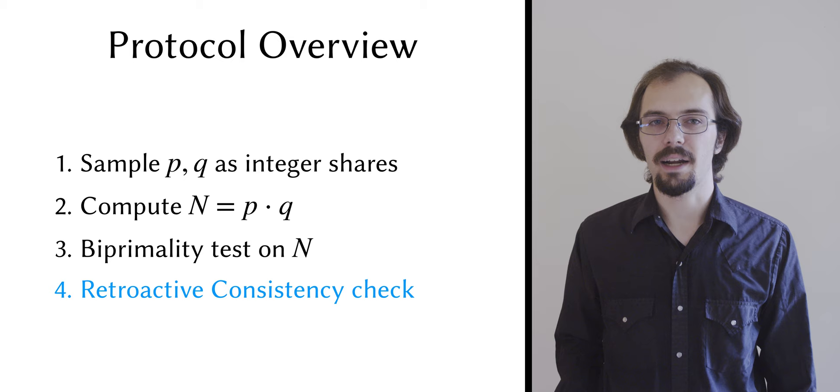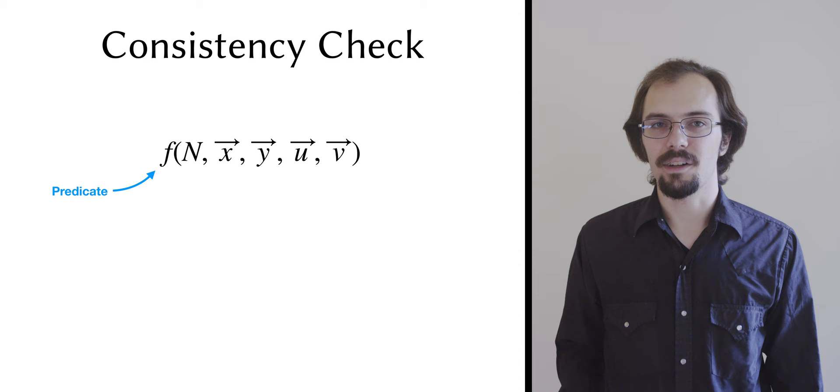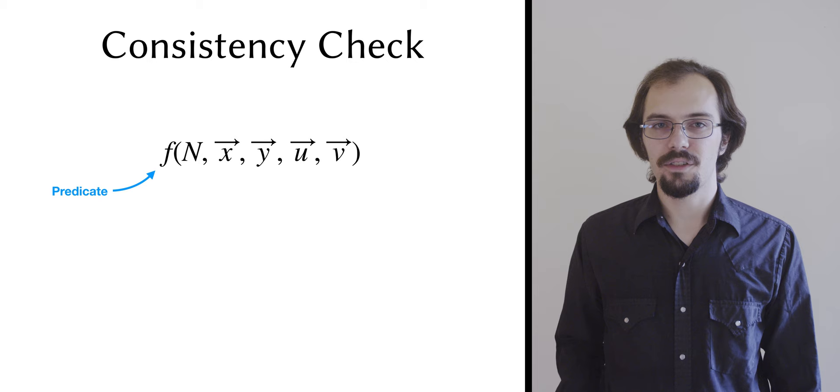Our retroactive consistency check ensures that the local operations are performed correctly, and that the inputs to the functionalities have the right relationships. We show that there exists a simple algebraic predicate involving only the modulus n and the expanded CRT form shares of p and q, here again I'm showing it to you in the two-party setting, which is sufficient to guarantee security against malicious behavior.